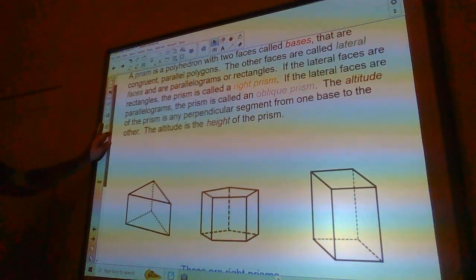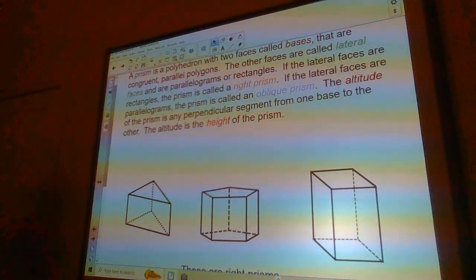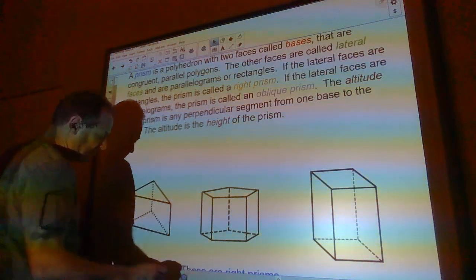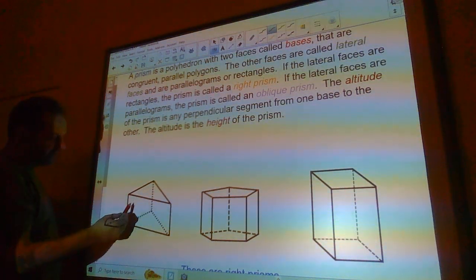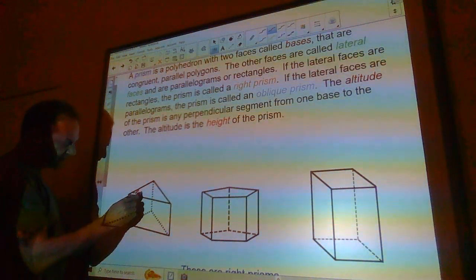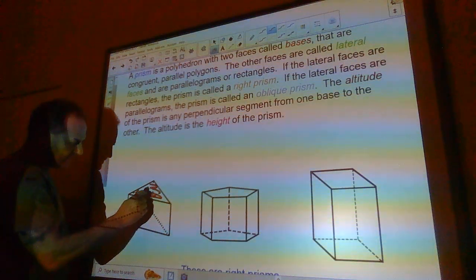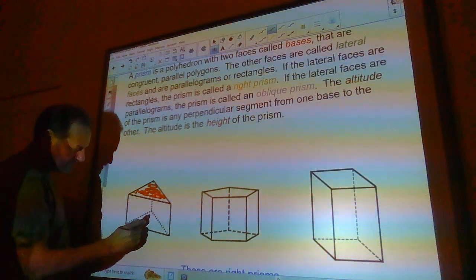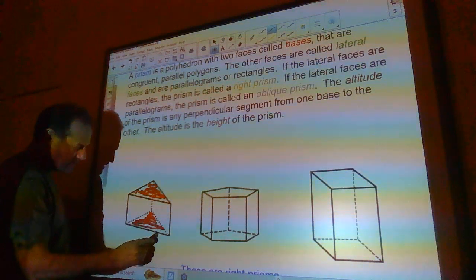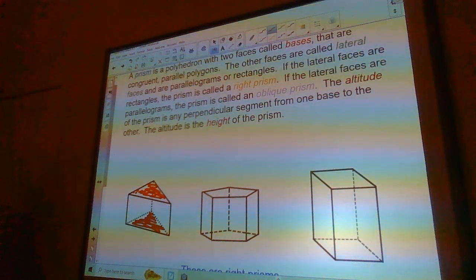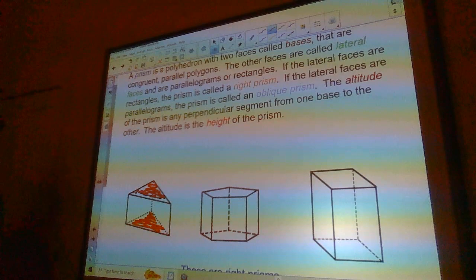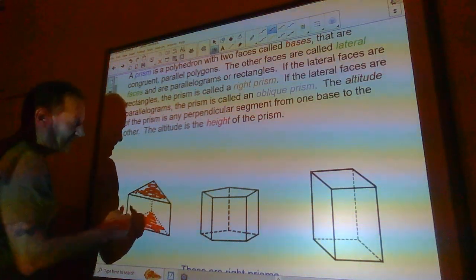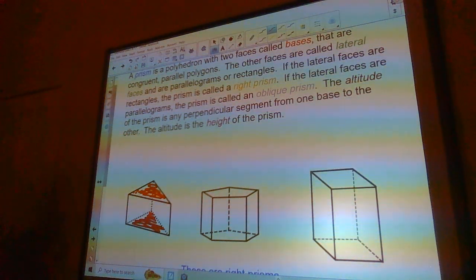A prism is a polyhedron with two faces called bases that are congruent parallel polygons. So here we have a triangular prism. It's a prism because it has this face and this face are parallel and they're exactly the same shape. The other faces, the ones that are rectangles and can occasionally be parallelograms, those are called lateral faces.